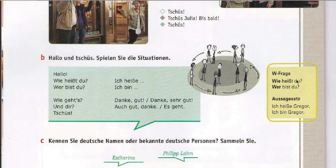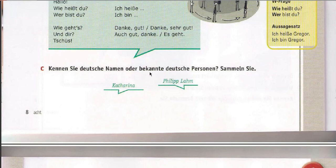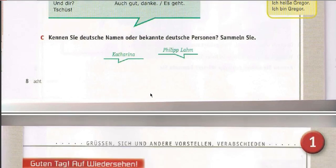That's representing the grammar portion. 'Wie heißt du?' — How is your name called? 'Aussagen' means statements. 'Ich heiße Gregor.' — 'Heißen' is representing the verb — I call, I name, to be named. 'Ich heiße Amjad.' 'Ich bin Gregor.' — I am Gregor. Do you know the names of Germans? 'Sammeln Sie' — collect them: Katrina, Müller, Thomas, Ludensky, Oliver Kahn.